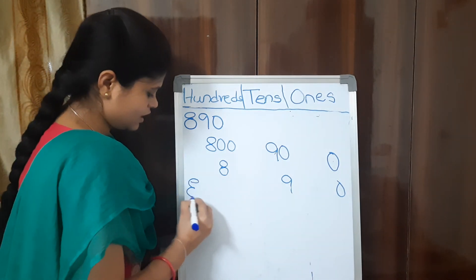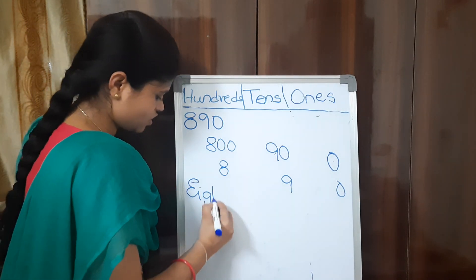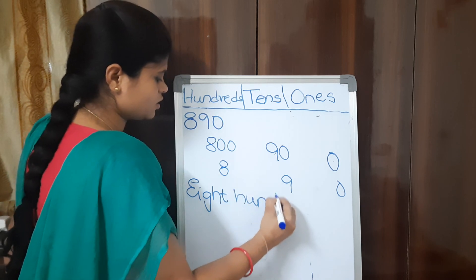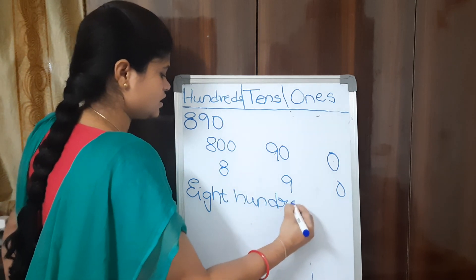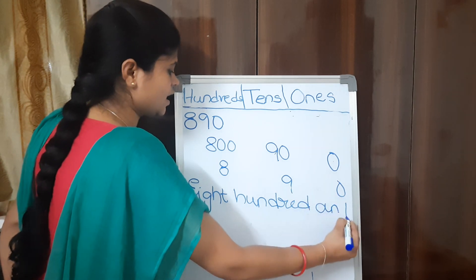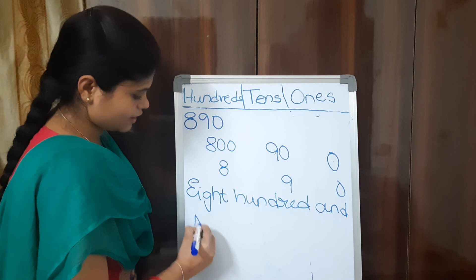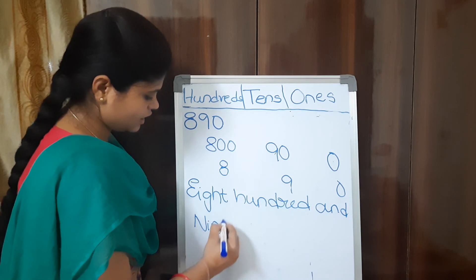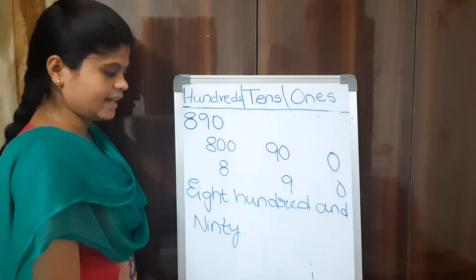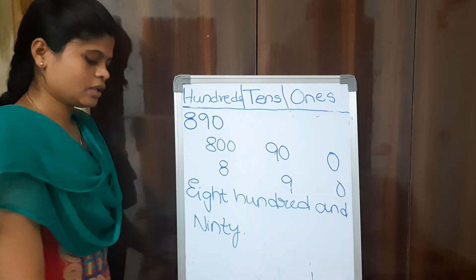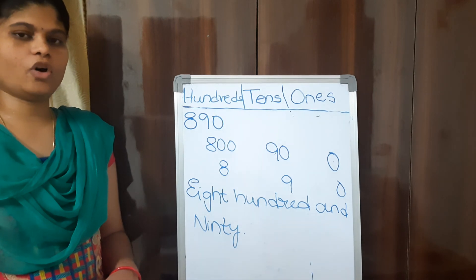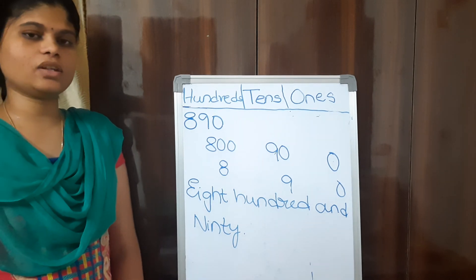What is the number name of 890? Eight hundred and ninety. With this we will end this session. Hope you understood. Thank you.